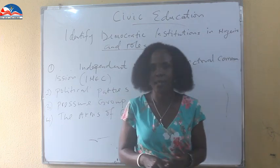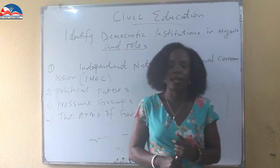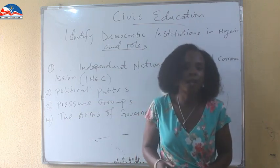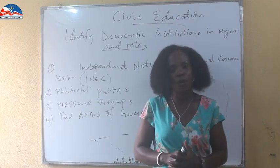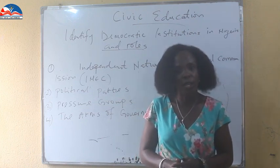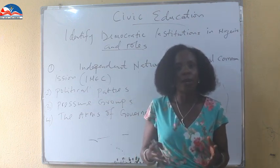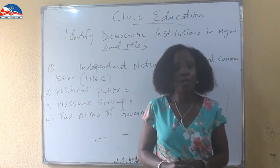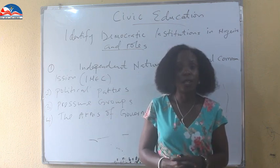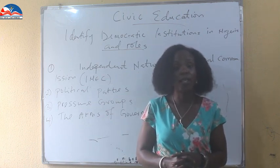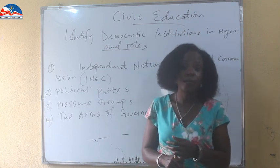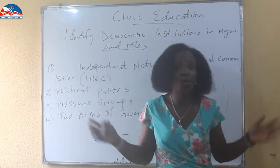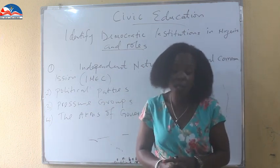INEC registers political parties. So what is a political party? They are a group of individuals who have a common ideology and who are ready to come out to contest in an election. This group of individuals with a common ideology come together under the umbrella of a party and choose their name — like we have the APC, the PDP, and a host of others, as Nigeria has many political parties.